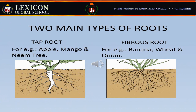Root is the part of the plant that usually grows underground, but not all plants have the same type of roots. Roots can be classified into two main types. First, taproot — a taproot is a thick root, straight at the top and tapering towards the bottom. For example, apple, mango, and neem trees have taproots.